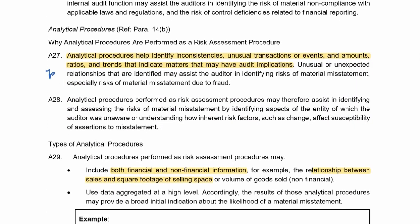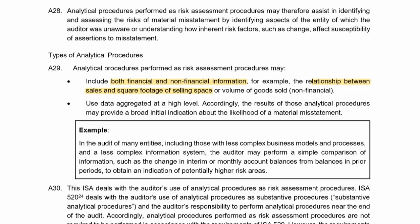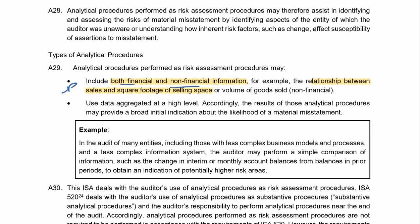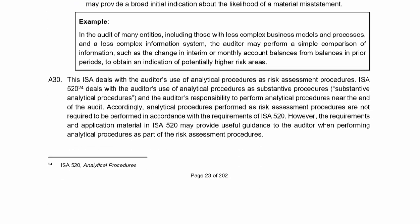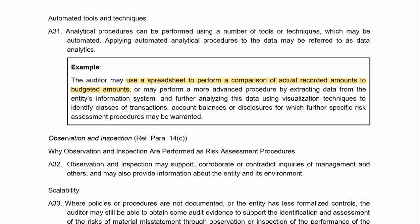For analytical procedures, you've got to perform them to pick up inconsistencies. You need to do ratios and trends, and you can use both non-financial and financial information. For example, you can look at a comparison of sales to square footage of selling space — where you've got a bigger selling space you expect higher sales, useful for comparing divisions or branches. Another example: compare salaries to the number of employees — in divisions with more employees you expect higher salaries — or compare year on year, where fewer staff last year means you expect lower salaries then.